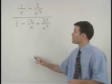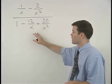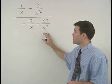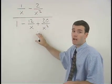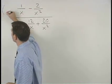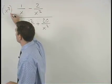The common denominator for x, x squared, x, and x squared is x squared. So to get rid of all of our fractions, we multiply top and bottom of the complex fraction by x squared.